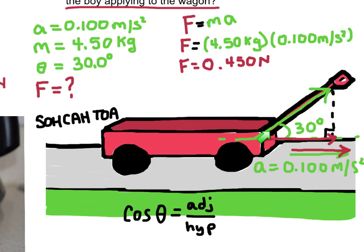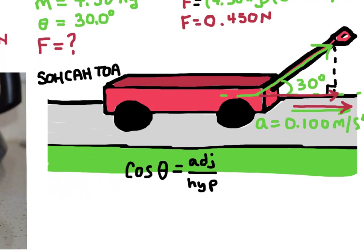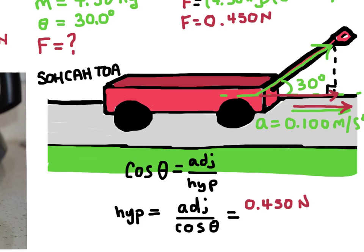So I do know the angle. I know that's going to be 30 degrees. And I now know the adjacent side as well. So let me rearrange this equation. And then I can plug in the adjacent side, which again is what I just solved for with force, and the cosine of the angle of 30 degrees. So cosine of 30 degrees.